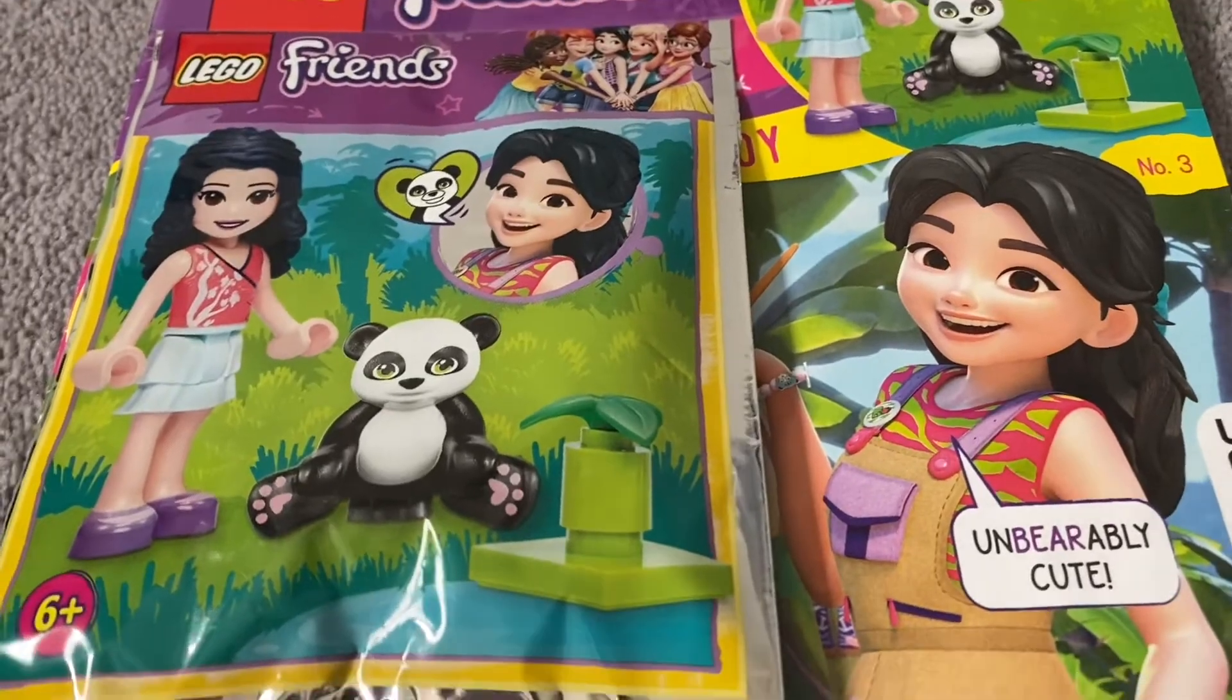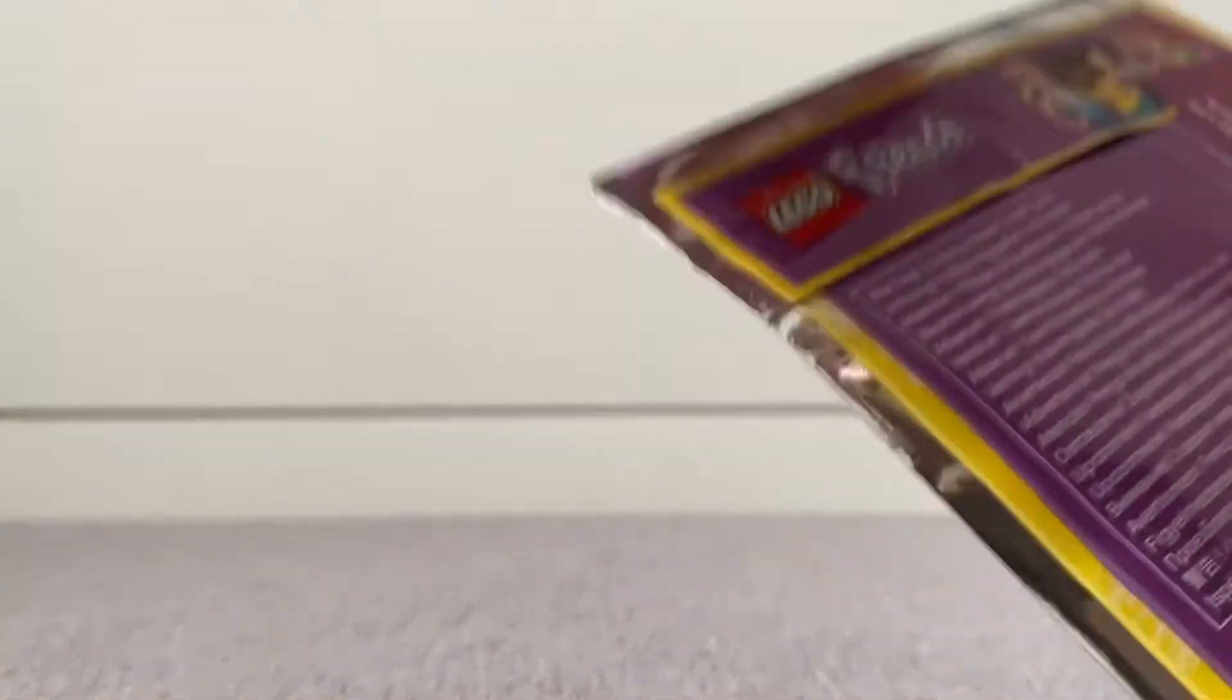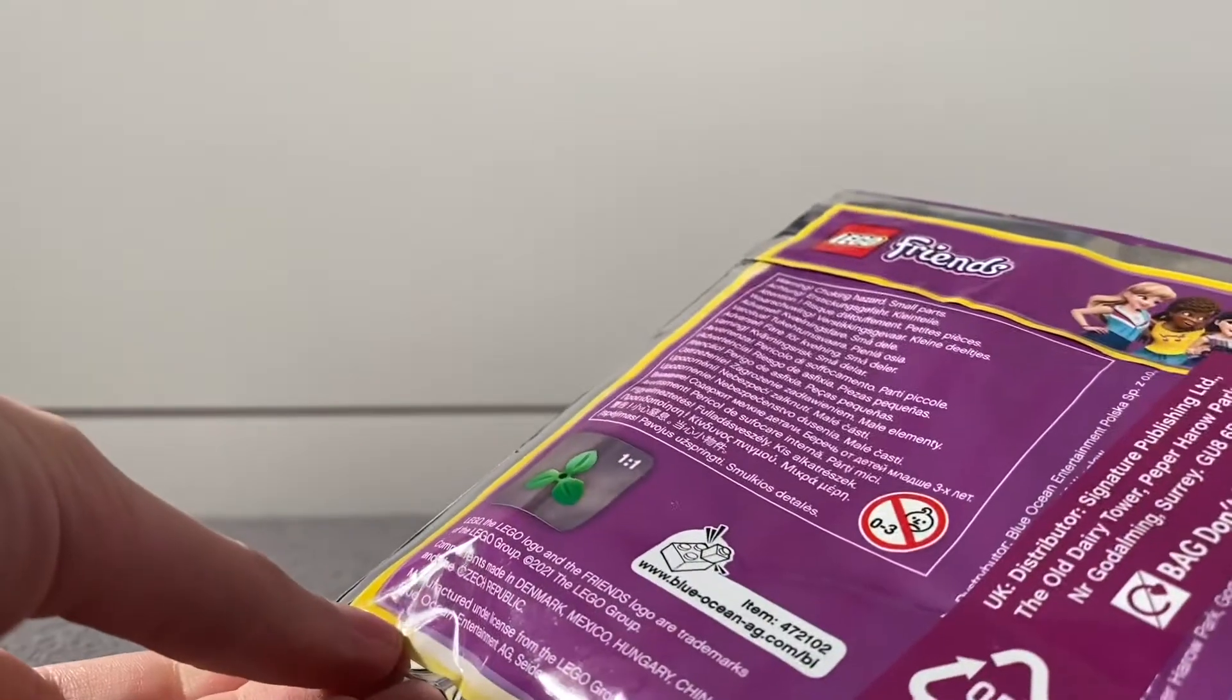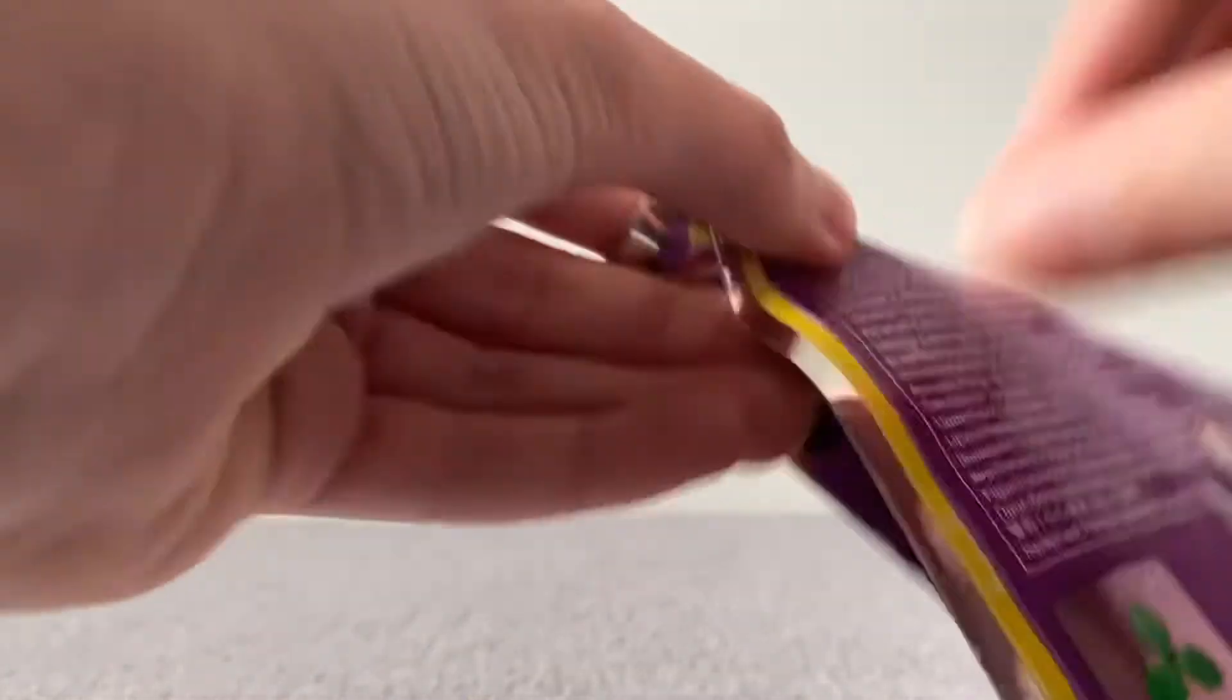So LEGO, it's gonna be nice and quick because it's only a minifigure and an animal. I don't even need to use the... well that sticker, that sticker holds the bag together. I'm not even going to use the instructions in the magazine for this one because this is so easy. I just have to put a minifigure together.